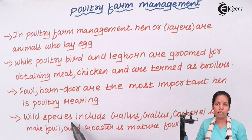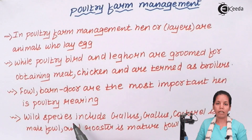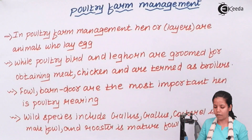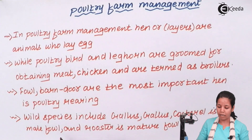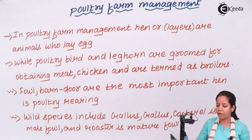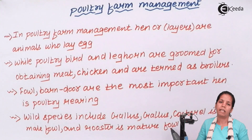The advantage of wild species is that they have great resistance to disease, they produce greater quantities of eggs, and the meat obtained from them is of greater quantity. Wild species include Gallus gallus. Among them there is another species called cockerel. Cockerel is a younger male fowl, and when this cockerel matures it is termed as a rooster, which is the mature fowl that can produce eggs or be used for obtaining meat.